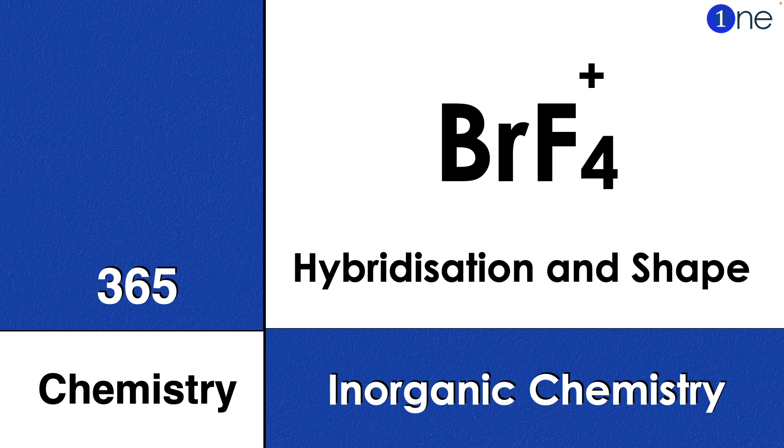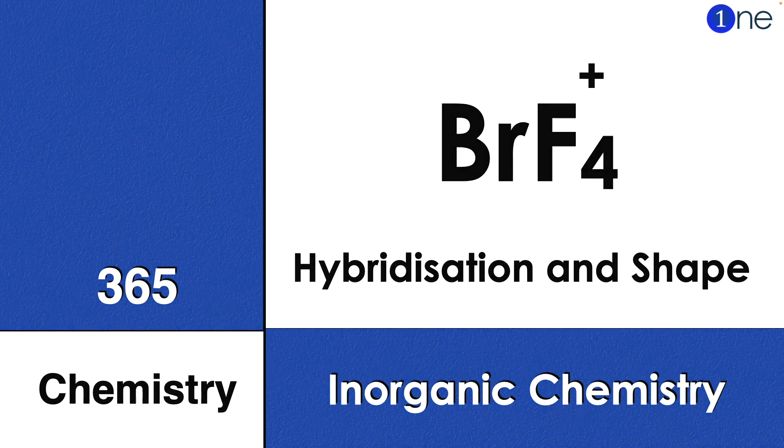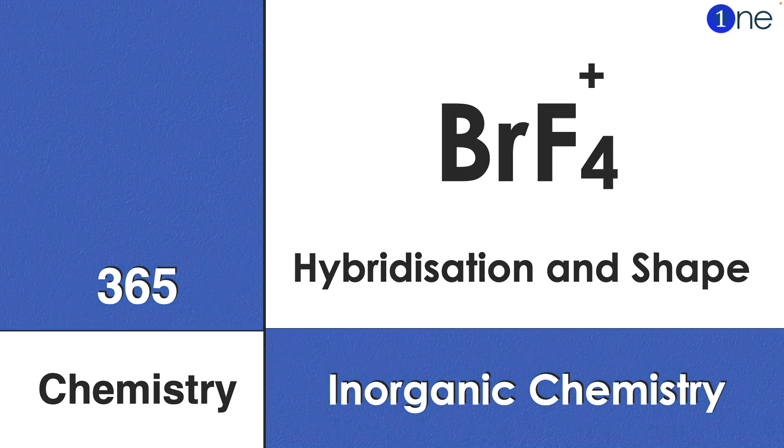Welcome to One Chemistry. This is 365 Chemistry Series, Inorganic Chemistry questions for you. Here you have bromine tetrafluoride cation. You should find hybridization and shape of it.